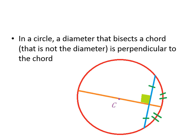In a circle, a diameter that bisects a chord that is also not a diagonal will be perpendicular to that chord. So if you draw a perpendicular bisector of any chord, you can find where the center is — the center has to be along that line somewhere. If I draw another chord and draw its perpendicular bisector, those lines intersect where the center is. So if you're given a circle and need to find the center, just draw two chords and find the perpendicular bisector of each — the point of intersection is the center of that circle.